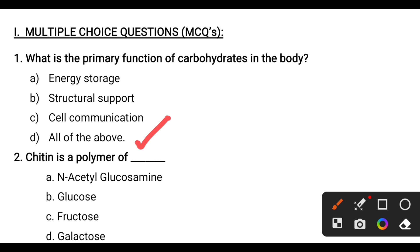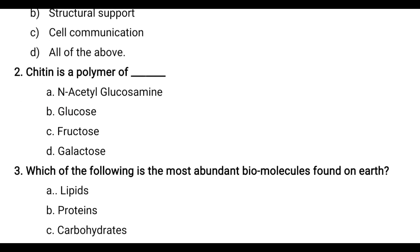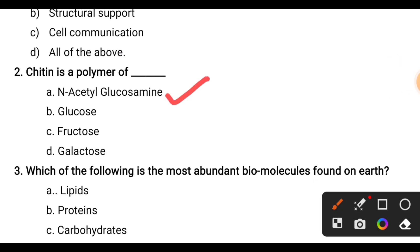The next question: Chitin is a polymer of — options are glucose, galactose, fructose, and acetyl glucosamine. The correct answer is chitin is a polymer of N-acetyl glucosamine.